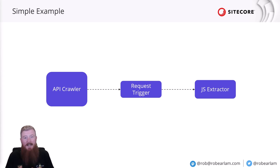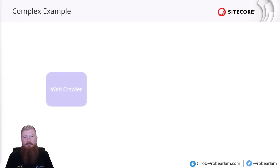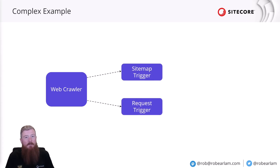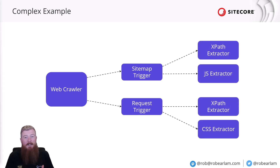Something like this is an ideal world scenario for an index source. Obviously though, you're not always going to be this lucky — sometimes you'll have to configure something a little more complex. In this next example, there isn't an API provided, so we have to use a web crawler to look over our website and find the different pages we want to index. We have a couple of different triggers configured: a sitemap for some of the data, but not all of it, so we've also configured a request trigger as well. The documents returned also aren't in a consistent format, so we need to configure a different set of document extractors for each different data format at the source.